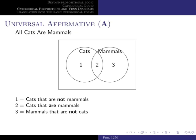Region one is the part of the circle of cats that doesn't overlap with the circle of mammals, so it represents those cats that are not mammals, if there were such things. Region two is the part where both circles overlap, representing things that are both cats and mammals. Region three is the part of the circle of mammals that doesn't overlap with the set of cats — if you're located in three, you're a mammal that isn't a cat.